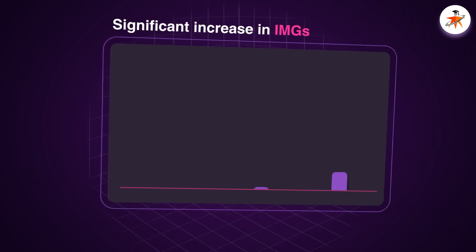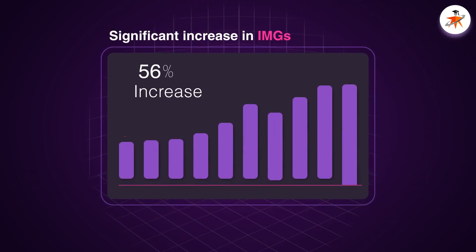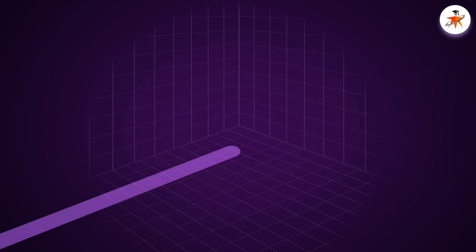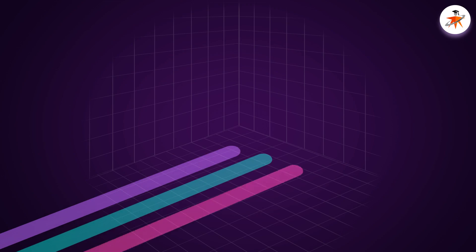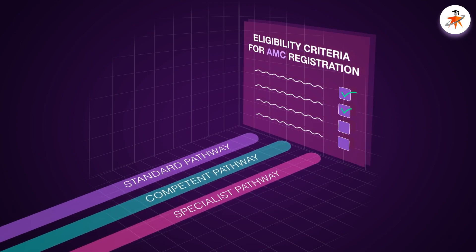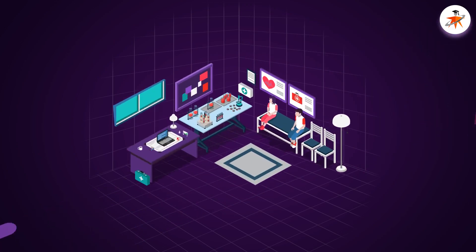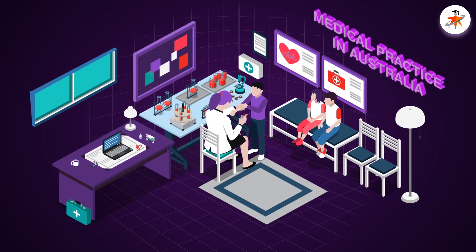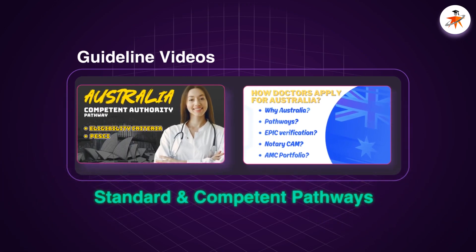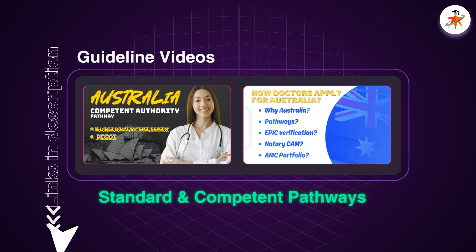On the other hand, we are seeing a recently significant increase in the number of international medical graduates applying for Australian Medical Council exam, AMC. You can follow different available assessment pathways, like standard, competent or specialist pathway, based upon your fulfilment of eligibility criteria for AMC registration, enabling you to practise medicine legally in Australia. We have separately covered standard and competent pathways in two of our separate videos, with links provided here and in the description section.